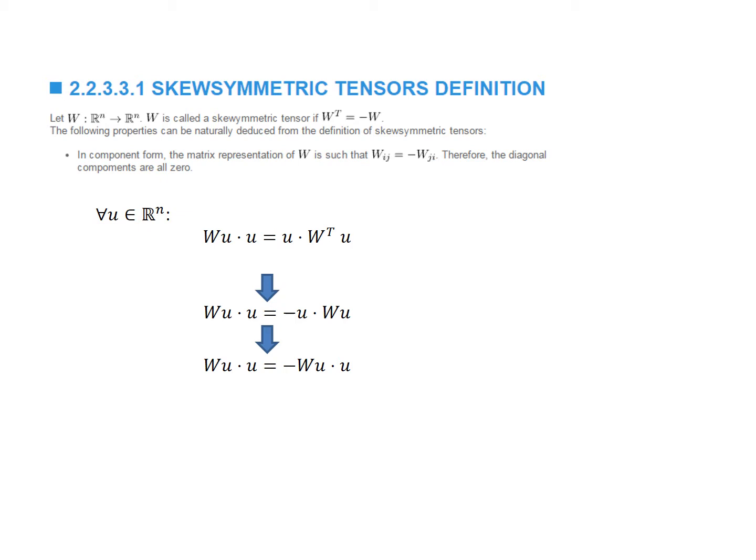Wu dot u is a real number. The only real number that equals its own negative is zero. This implies that Wu is perpendicular, or orthogonal, to u.